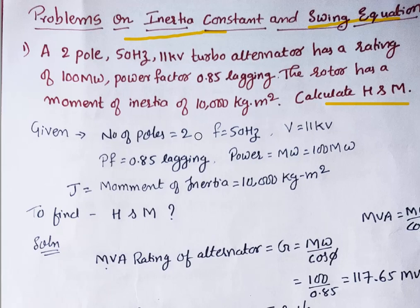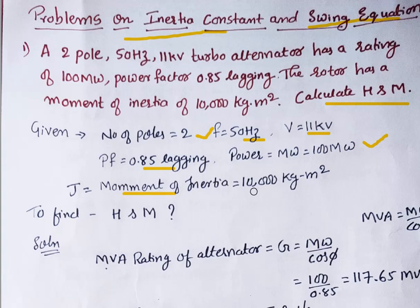The given data: number of poles is 2, frequency is 50 Hz, voltage is 11 kV, power factor is 0.85 lagging, power is 100 MW, and the moment of inertia J has been given as 10,000 kg·m². Now, how to find H and M is our question.